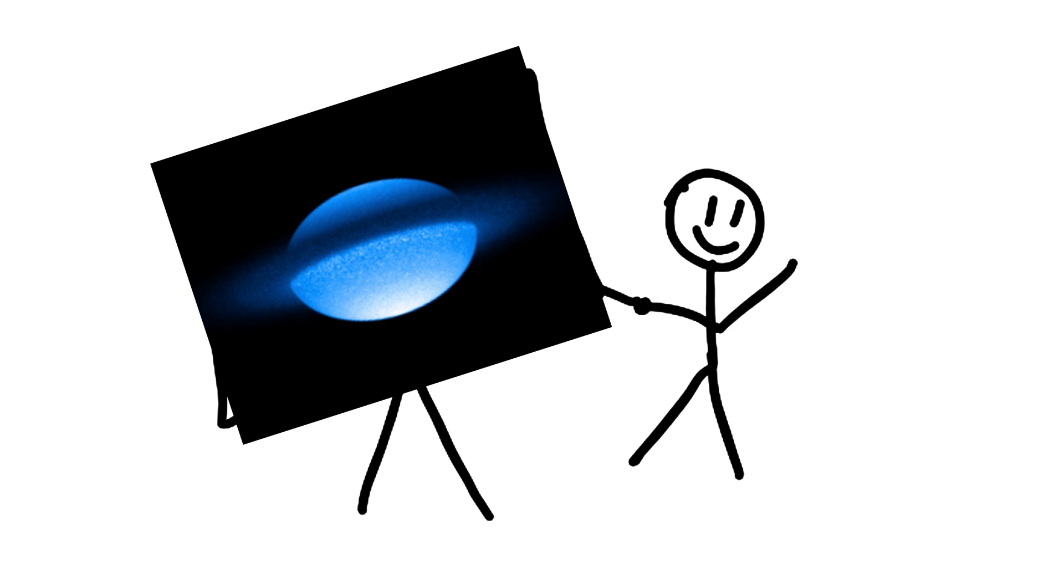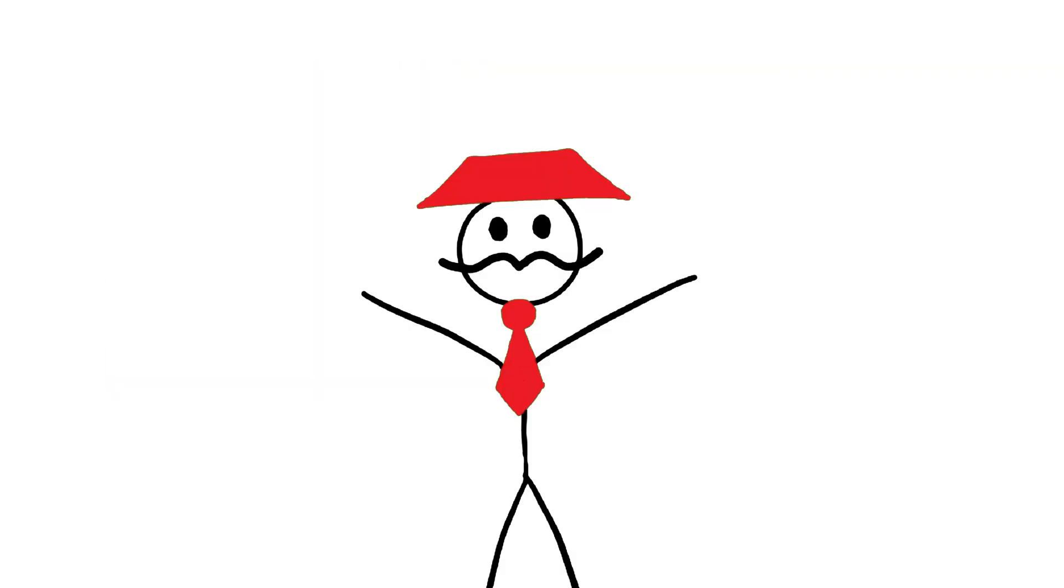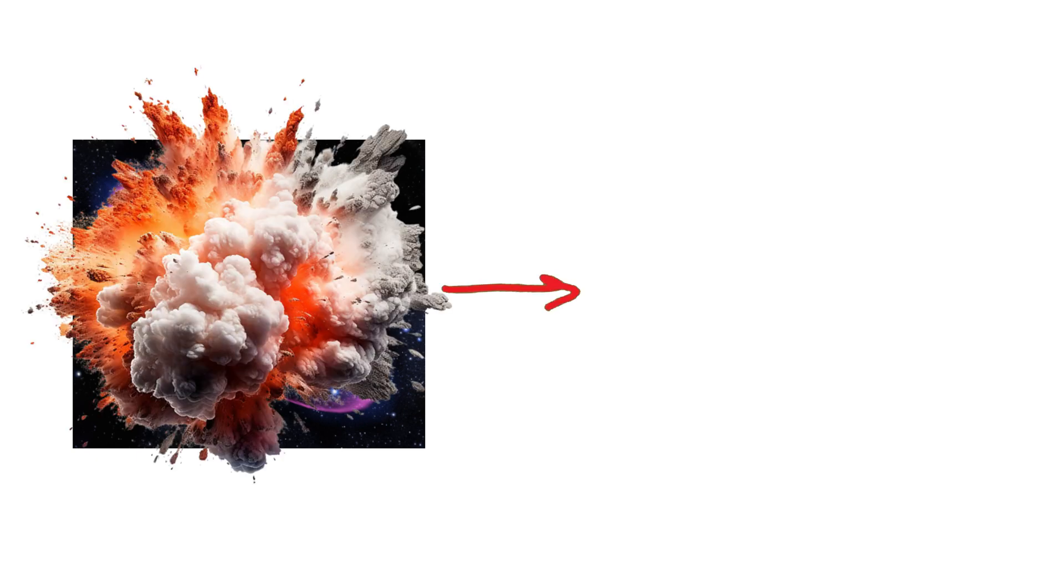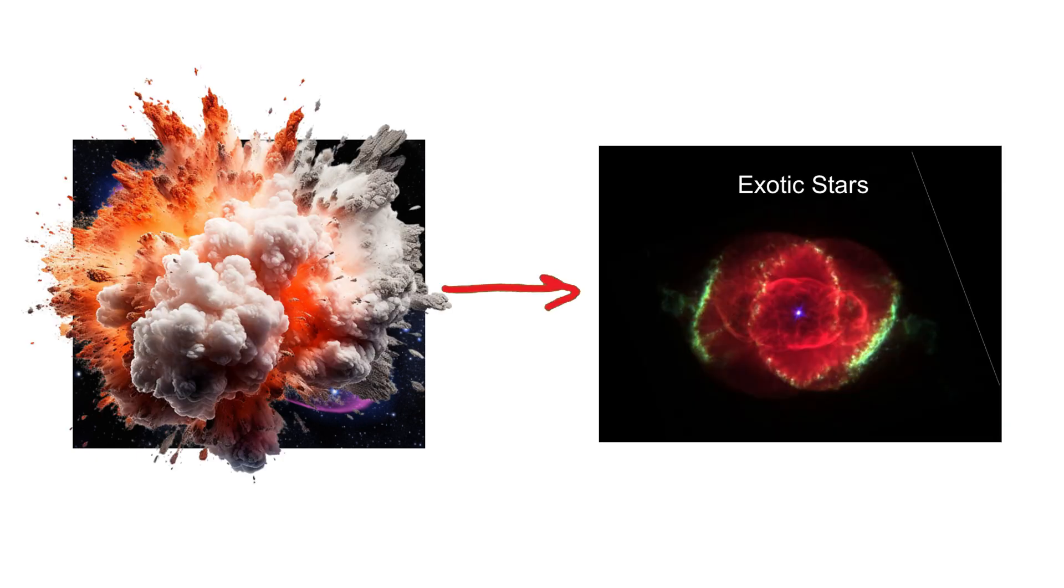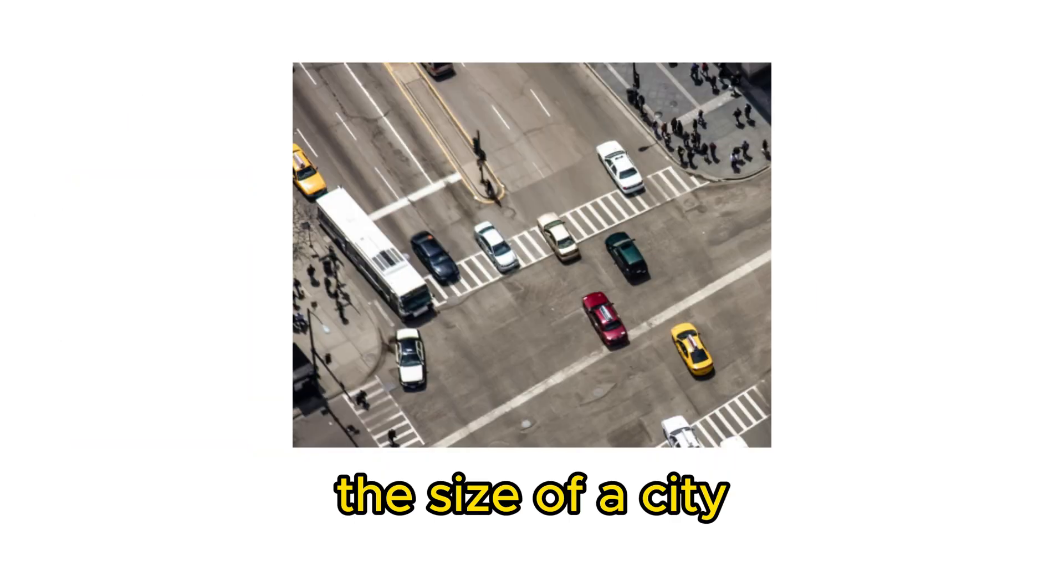Exotic stars are unusual celestial objects that differ from typical stars like our sun. These stars have unique properties that make them intriguing to scientists. One type of exotic star is the neutron star, formed from the remnants of massive stars after a supernova explosion. Neutron stars are incredibly dense, packing more mass than our sun into a sphere the size of a city.